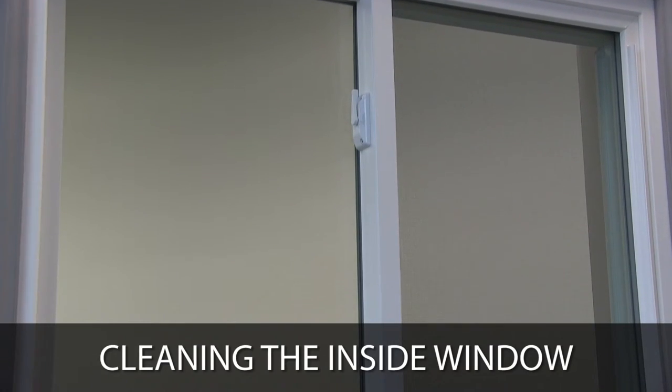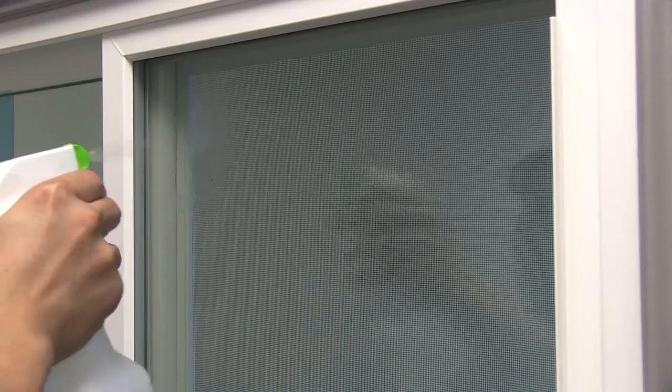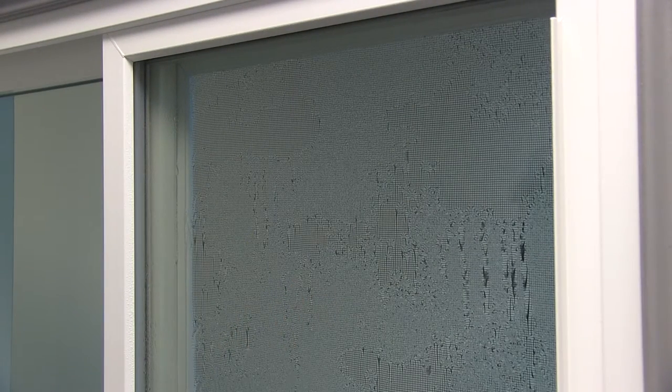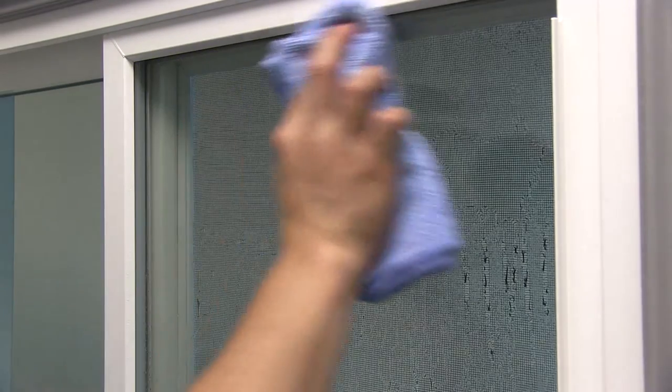To clean the inside of your window, fill up a spray bottle with some cleaning solution and spray the glass evenly. Use a microfiber towel to wipe your windows dry.